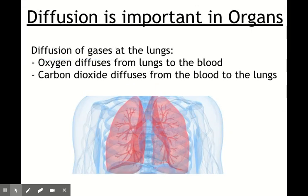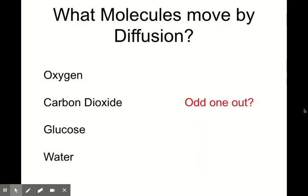One important example of diffusion in our body is in the lungs: oxygen diffuses from the lungs into the blood after we breathe in, and is transported to our cells. Carbon dioxide diffuses from the blood into the lungs so we can breathe it out. Out of the four smaller molecules, water is the one not yet mentioned — and it's really important that you never talk about water diffusing. Water has its own process of moving across the membrane: osmosis, which is what we're moving on to next.